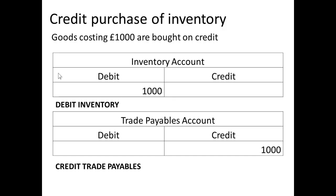We have the credit purchase for inventory. We debit the inventory, because we're now regarding what we purchase as an asset, and we credit the trade payables, because we owe the money for the goods.